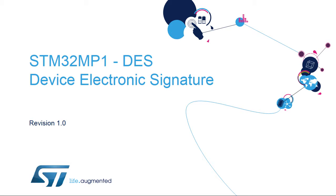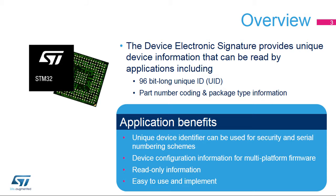Welcome to this presentation of the STM32 Device Electronic Signature, which can be used as a device identification or serial number. The Device Electronic Signature provides a set of registers containing die identification, unique device identifier or UID, and other read-only device information, such as memory size, package type, and device calibration information.